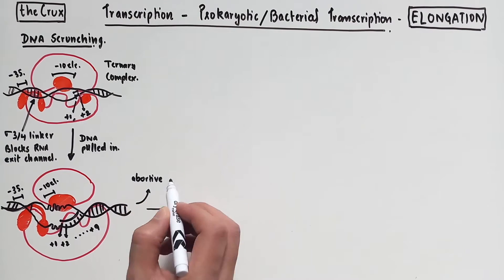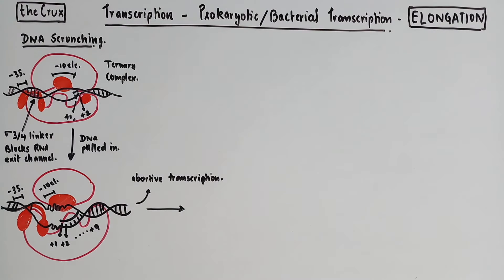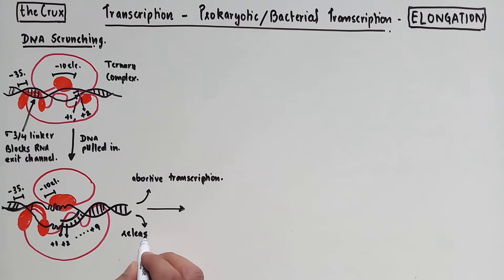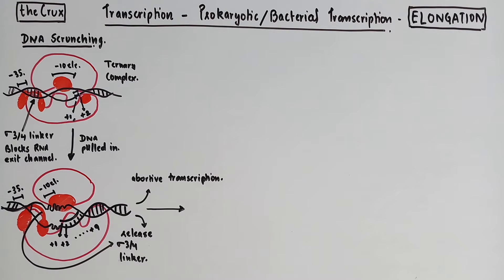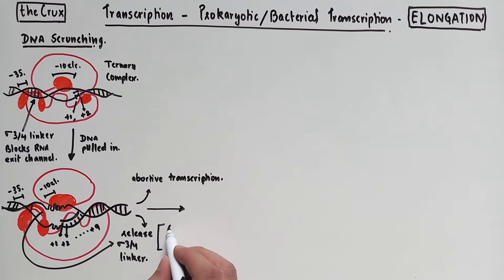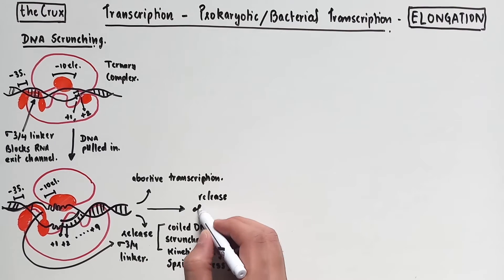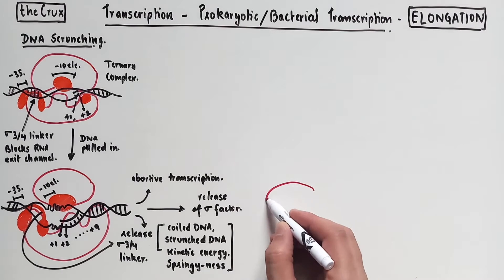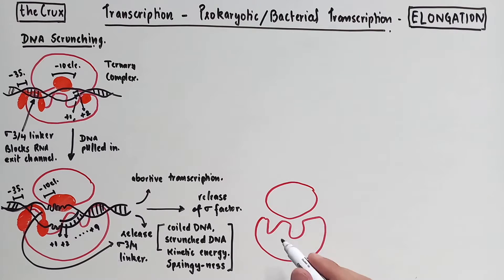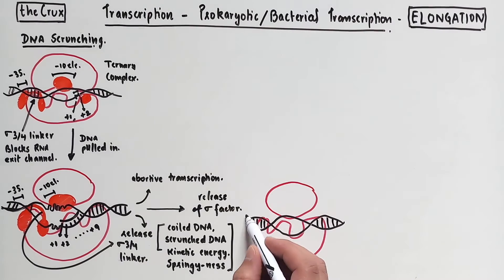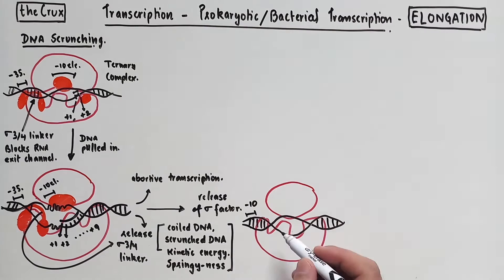At this stage, you can either have abortive transcription where you restart again at the open complex step of the initiation, or the enzyme is stable enough that the sigma 3-4 linker is kicked out of the RNA channel. The scrunched or coiled DNA provides the kinetic energy for the enzyme to relax. Think of this as an action of a spring. After this relaxation, usually the sigma factor is released.